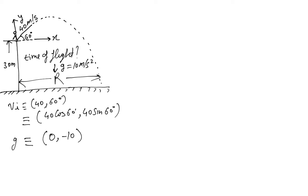40 cos 60 is the velocity in the x direction and it's not being acted by any acceleration. 40 sin 60 is the velocity in the y direction and it's being acted by an acceleration minus 10. So first of all, time of flight, we can always calculate time of flight.